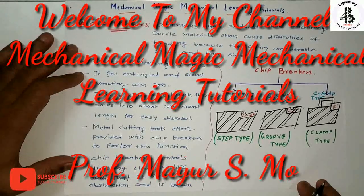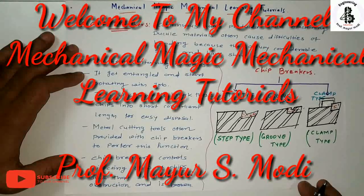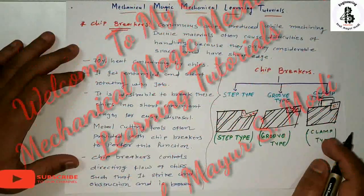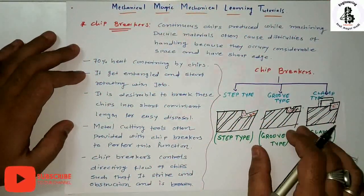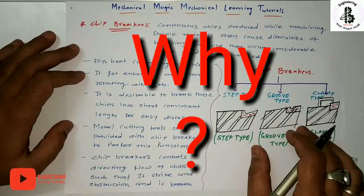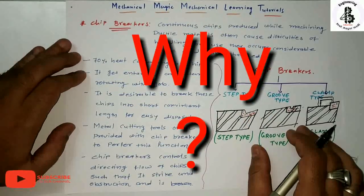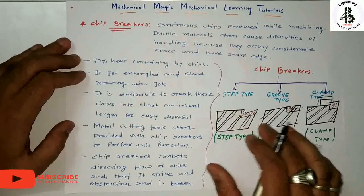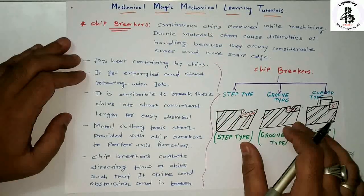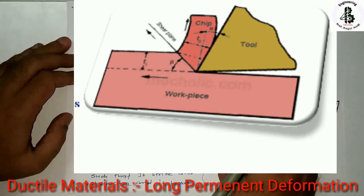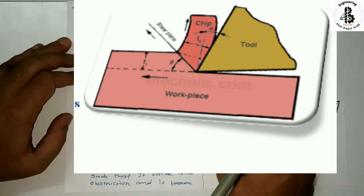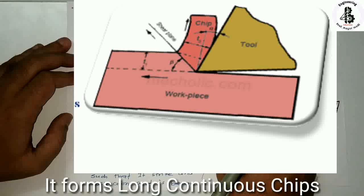Welcome to my YouTube channel Mechanical Magic, mechanical learning tutorials. In my previous lectures I was talking about chip formations in the case of ductile and brittle materials. In the case of ductile materials, that material has the characteristics of long permanent deformations. So for metal cutting operations in the case of lathe machines or shaper machines, it will be developing long continuous chips.